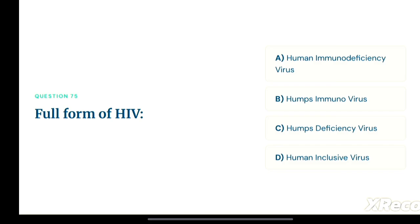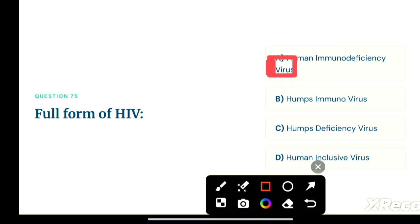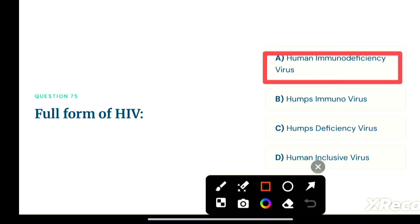Next question: the full form of HIV — option A: human immunodeficiency virus, option B: HMS immunovirus, option C: HMS deficiency virus, option D: human inclusive virus. The full form of HIV is option A, human immunodeficiency virus.